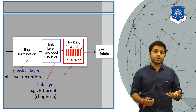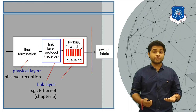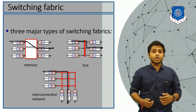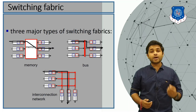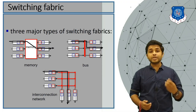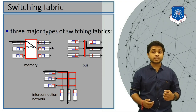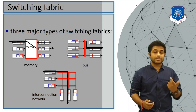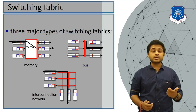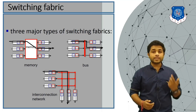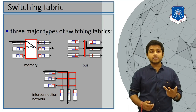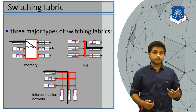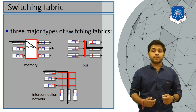Now let's see what switch fabric is. There are three major types of switch fabrics: the first is called memory, the second is called bus, and the third is called interconnection network. Let's look at each one.